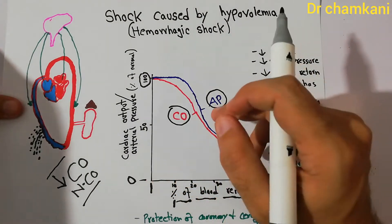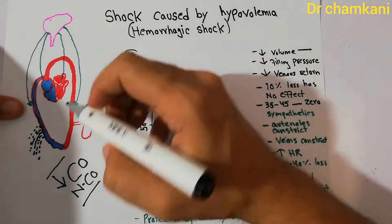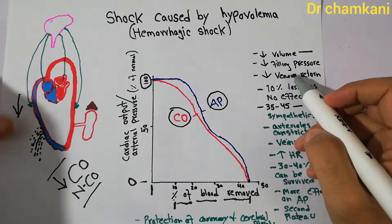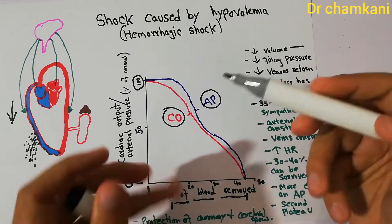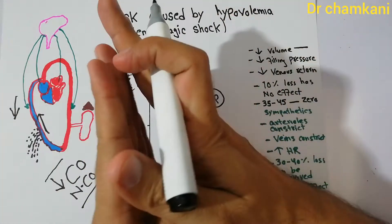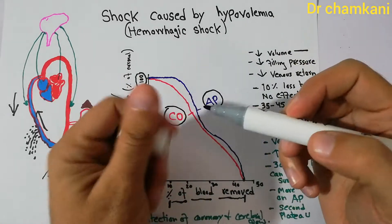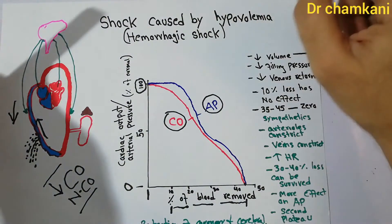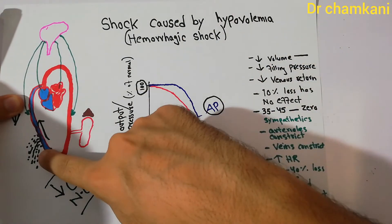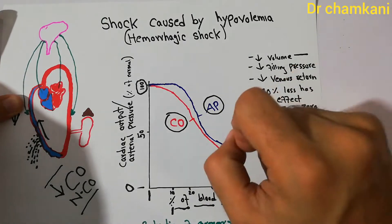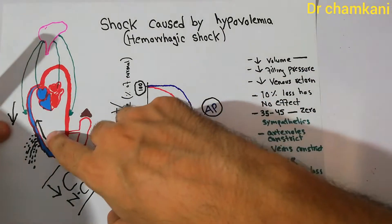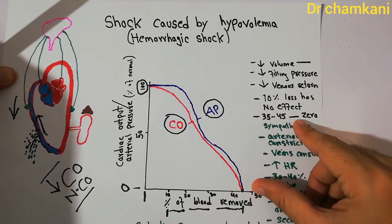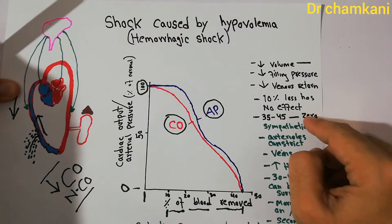As blood is removed from the body, the volume of blood decreases, which decreases the filling pressure. Filling pressure is the pressure that pushes blood towards the heart and helps in venous return. Up to 10% of blood loss has no significant effect on filling pressure or venous return, so arterial pressure and cardiac output are maintained. At around 30 to 45% blood loss, arterial pressure and cardiac output fall to zero, and there is no sufficient preload for the heart to pump.